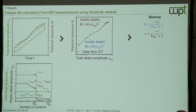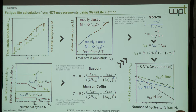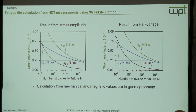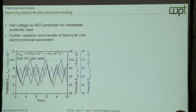With those exponents we go into the empirical equations by Morrow and get the fatigue ductility and fatigue strength exponents. Taking the two constant amplitude tests, we can calculate the plastic strain amplitude. Since they are additive, we now have plastic and elastic strain amplitude at half of N-fracture, and we go into Basquin and Manson-Coffin. Under the assumption that elastic and plastic strain lines are additive, we can plot the whole diagram. The results from stress amplitude and from the Hall voltage signal are in good agreement and fit well to the constant amplitude tests.